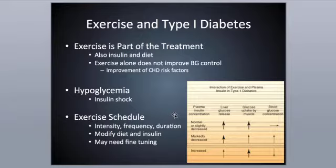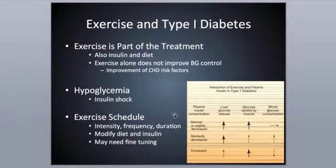Exercise alone doesn't improve blood glucose control in Type 1 diabetics, but there is improvement in coronary heart disease risk factors — decreasing total peripheral resistance, increasing high-density lipoprotein (HDL, the good cholesterol), and decreasing the bad cholesterol (LDL).